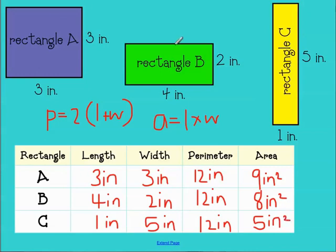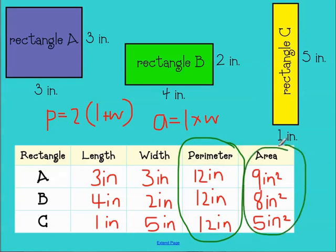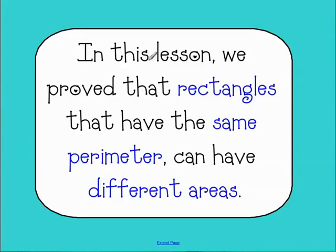So by comparing rectangle A, rectangle B, and rectangle C, and charting my information, we can see that the perimeters are the same but the areas are different. So we have answered our question. We proved that rectangles that have the same perimeter can have different areas.